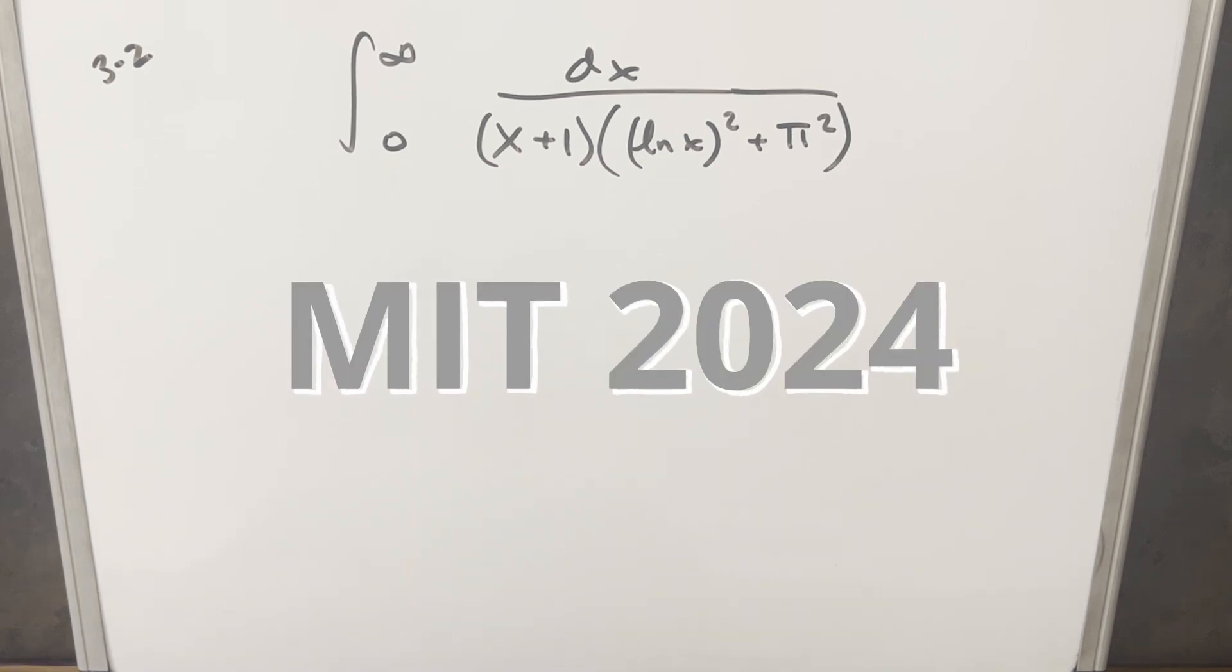Okay, we have our tenth interesting problem from the MIT integration B quarterfinals, round 3, problem 2. We have the integral from 0 to infinity, 1 over x plus 1 times natural log x squared plus pi squared dx.